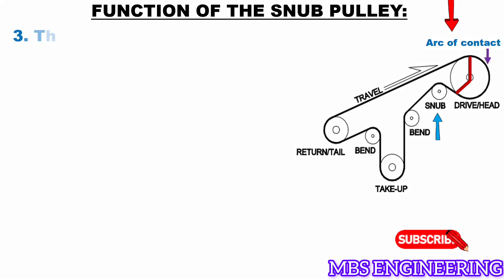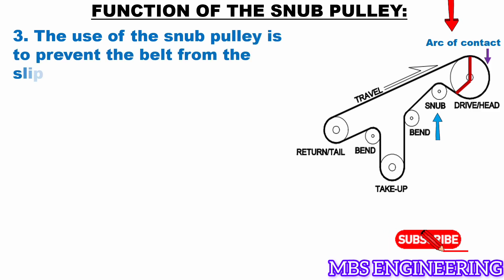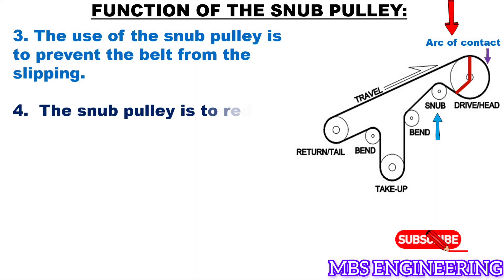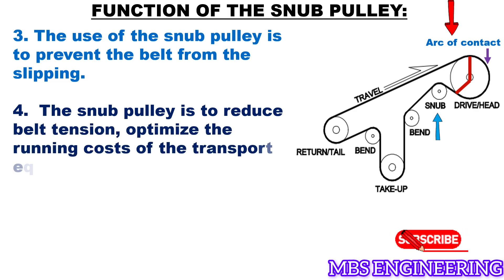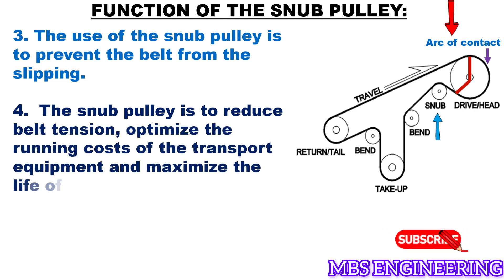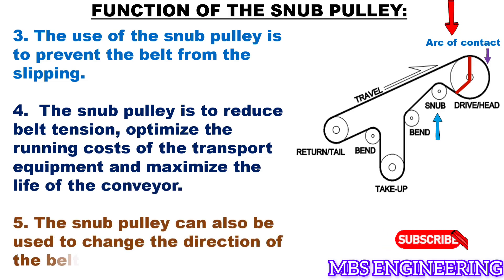The third function is the use of the snub pulley to prevent the belt from slipping. The fourth function is that the snub pulley reduces belt tension, optimizes the running costs of transport equipment, and maximizes the life of the conveyor. The fifth function is that the snub pulley can also be used to change the direction of belt operation.